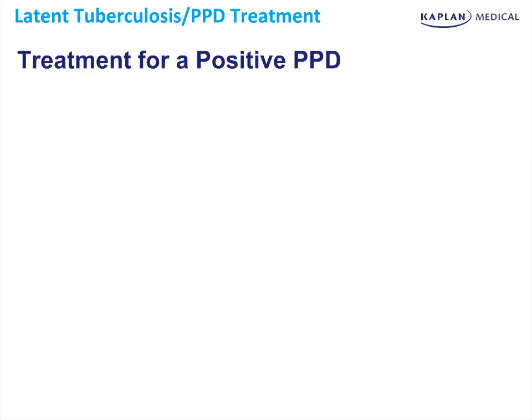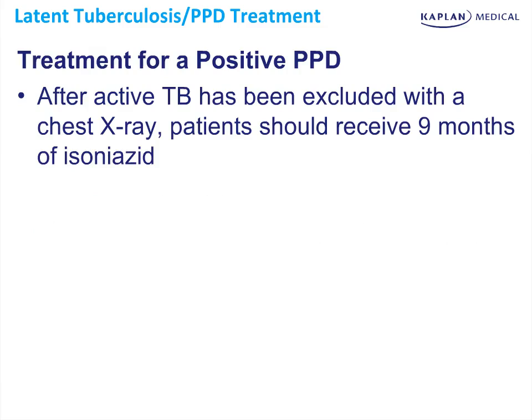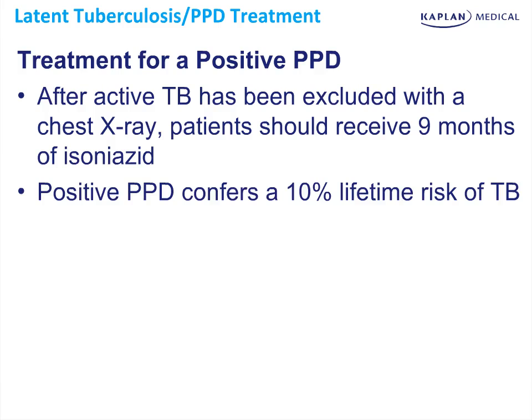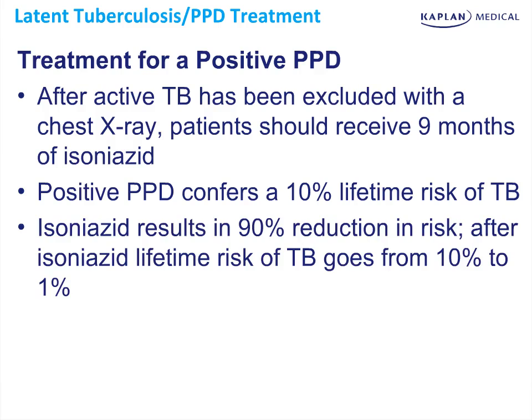If the PPD is confirmed as positive, the first step is to exclude active TB with a chest x-ray. If the chest x-ray is normal and active TB has been excluded, patients should receive nine months of isoniazid monotherapy. The positive PPD confers a 10% lifetime risk of TB. Isoniazid therapy will then result in a 90% reduction in risk, bringing your lifetime risk of reactivation from about 10% down to 1%.